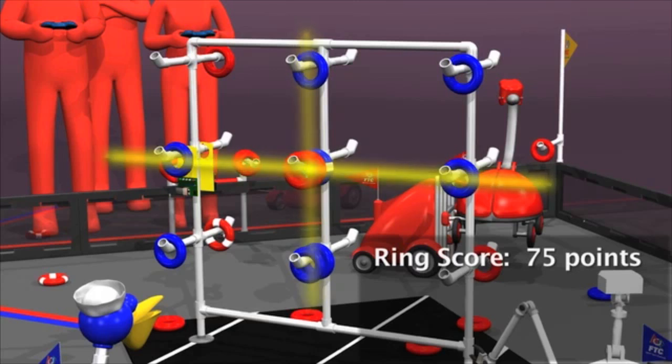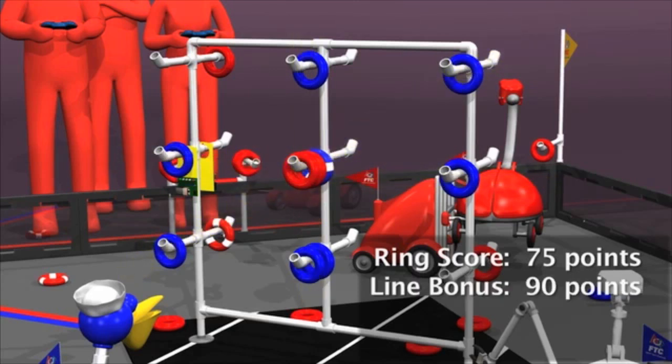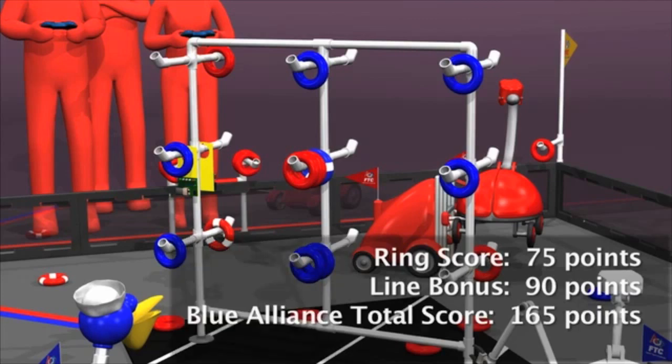And they have three lines of three pegs, so they earn a line bonus of 90 points. Even though one peg has more red rings, the blue alliance owns it because of their autonomous ring. The total score for the blue alliance is 165 points.